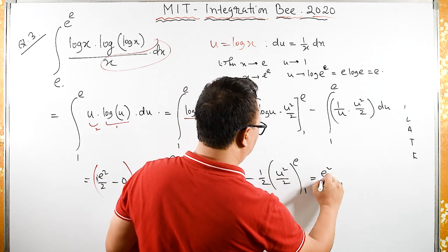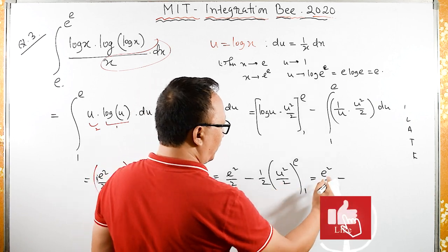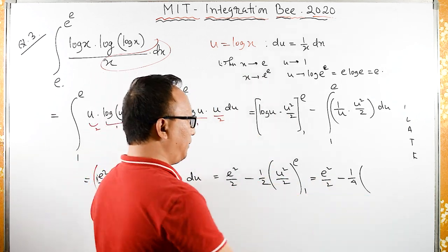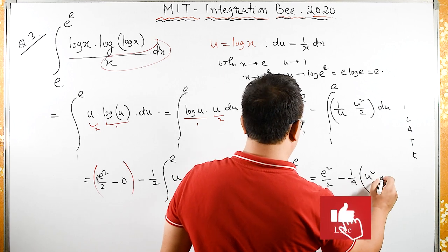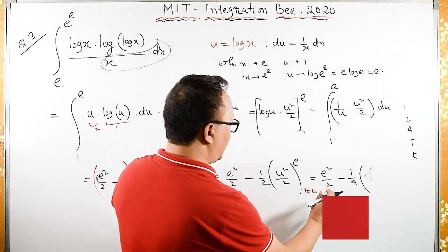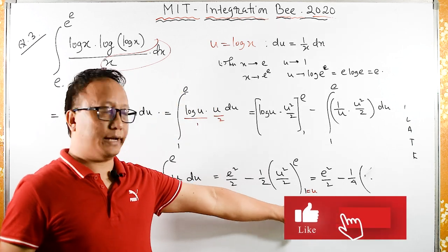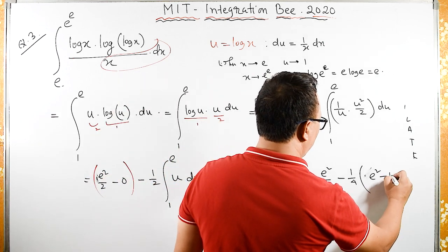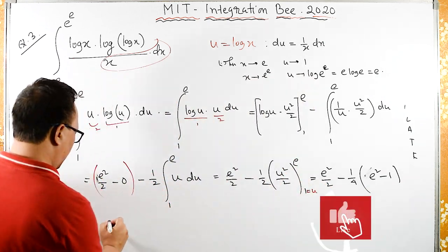Equals e squared upon 2 minus, here 2 times 4, so 4 in the denominator. Upper limit minus lower limit: e squared minus 1.